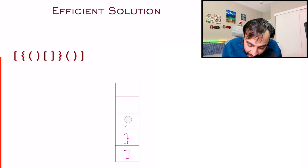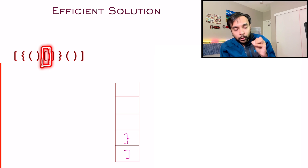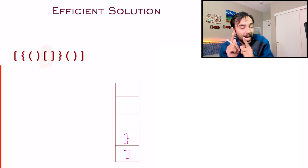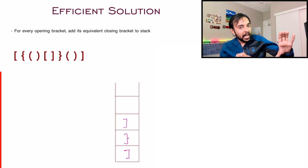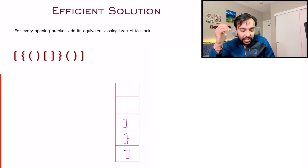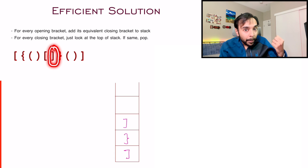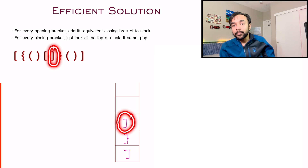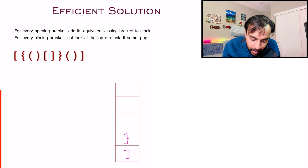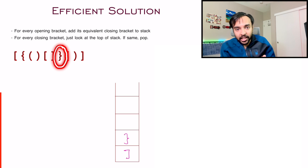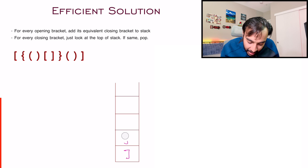Move ahead again. You see an opening square bracket — add its closing square bracket to the stack. Basically, if you are getting any opening bracket, just add its corresponding closing bracket to the stack. Now you have a closing bracket: look at the top element in your stack — it is the same, so you found a pair. Remove it and move ahead. The next element is a closing curly bracket — look in your stack, you have the closing curly bracket, so remove it once again.